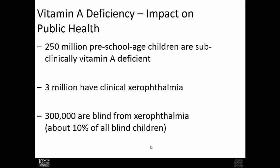Vitamin A deficiency has a significant impact on global health. It's estimated that about two and a half million preschool children are subclinically vitamin A deficient, at least three million people have clinical xerophthalmia, and about 300,000 people are blind because of xerophthalmia — accounting for 10% of all blind children worldwide.